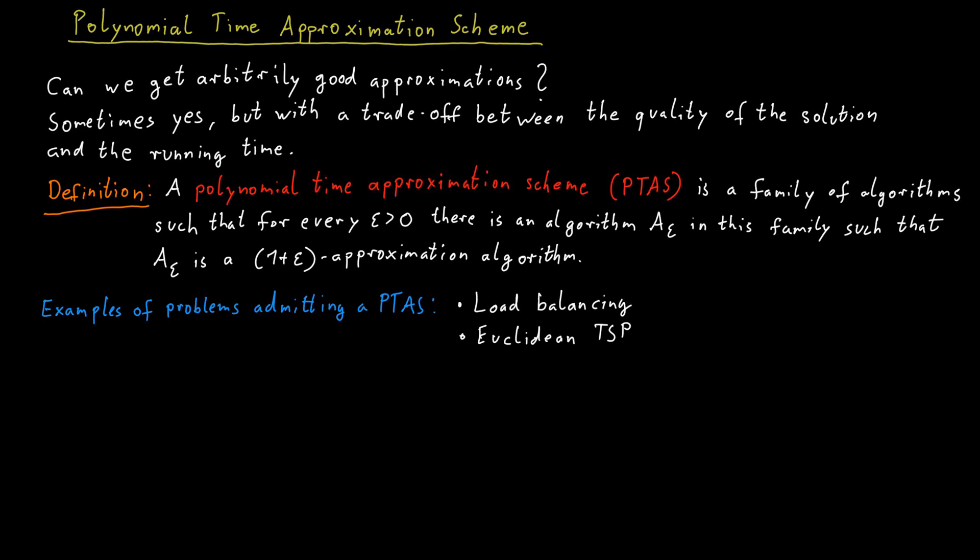As I said, the running time can depend on the approximation guarantee you require. In particular, if we require an approximation guarantee of 1 plus epsilon, the running time will depend on the size of the input, n, as well as on 1 over epsilon. In a polynomial time approximation scheme, we require the running time to be polynomial in the input size, n, but we do not necessarily require it to be polynomial in 1 over epsilon as well.